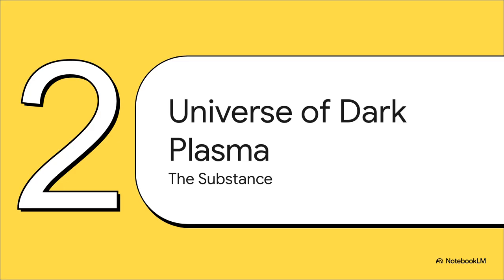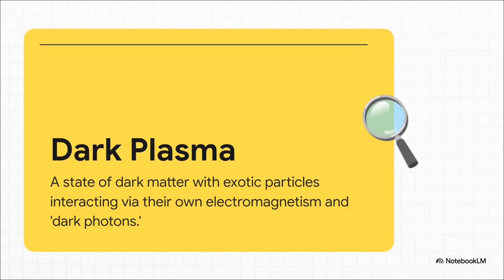Now, usually when you think of dark matter, you probably picture these inert, kind of ghost-like particles that don't do much. But Alfred's paper pulls from theories that suggest it's something way more dynamic. The idea is that dark matter might have its own set of rules, its own physics. It could be made of particles with positive and negative charges, just like ours. But they interact using a dark electromagnetic force mediated by, you guessed it, dark photons.